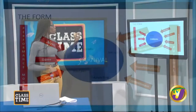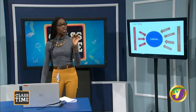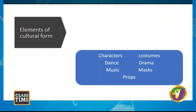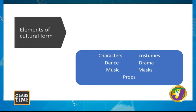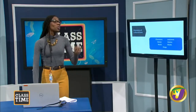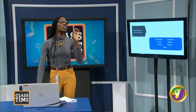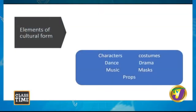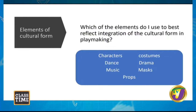We also want to examine the elements of the cultural form. Basic elements include characters, costumes, dance, drama, music, masks, and props. These elements are not just elements of cultural form — they are also dramatic and theatrical elements. We want to ask ourselves which elements we would best use when integrating the cultural form into playmaking. A major part of the playmaking exercise is that you must integrate the cultural form — not just mention the term, but make it the engine that drives the play.